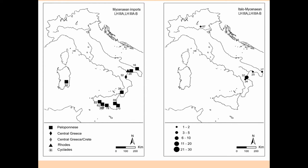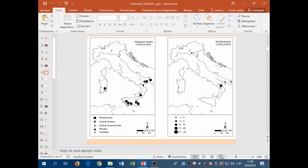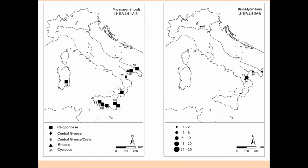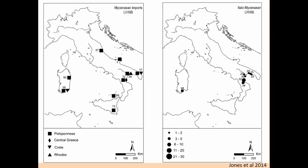You can see immediately that the distribution — setting apart this point here in northern Italy, which can also be disputed — shows that we have mainly local production in the group of Taranto and in the area of the Ionian Sea, and we have a lot of imports from different areas in the same region, and also in Sicily and Sardinia.